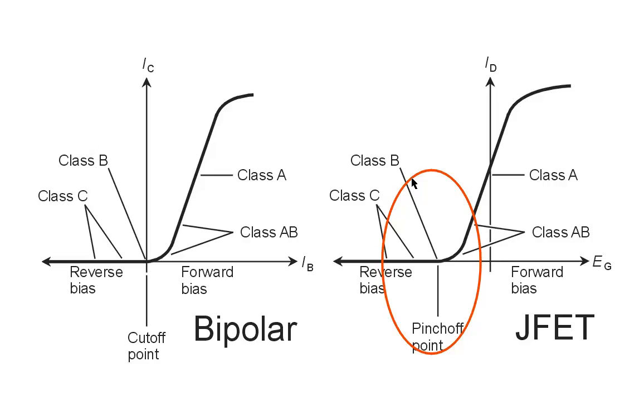In addition, class C operation produces significant distortion of the waveform in the output. The further we go down this curve at the bias point, the greater the amount of distortion we will see in the output waveform. In fact, if we were not to drive this device sufficiently, we wouldn't get any output at all in class C operation.